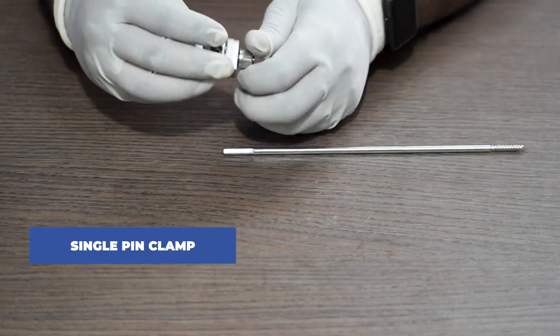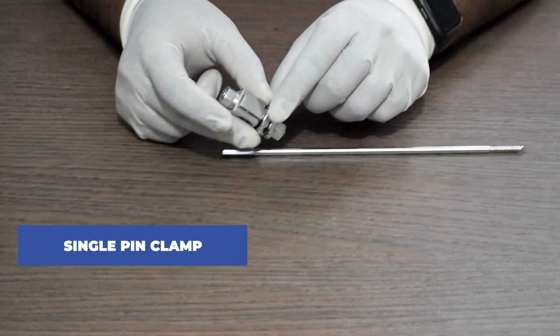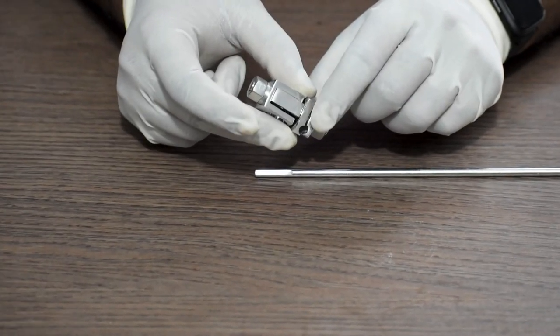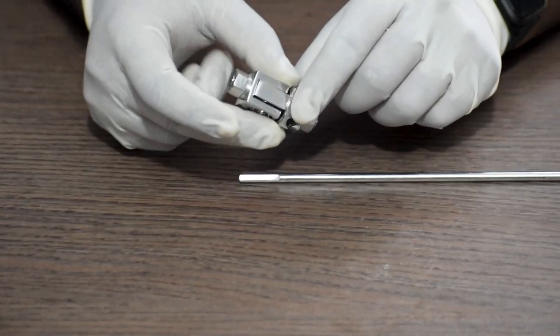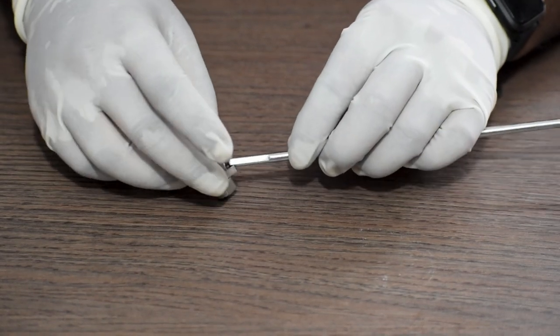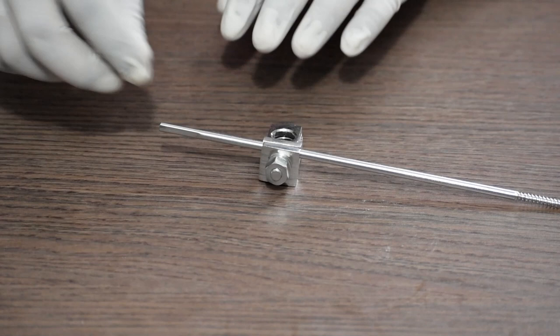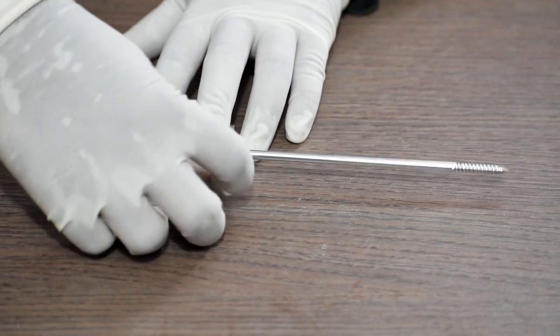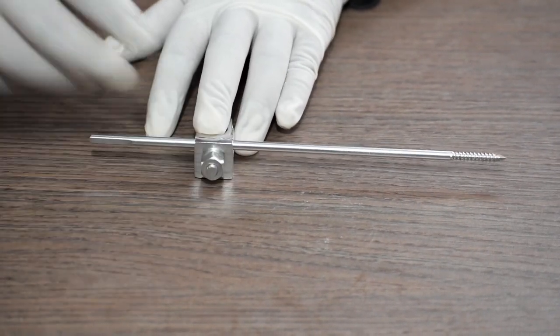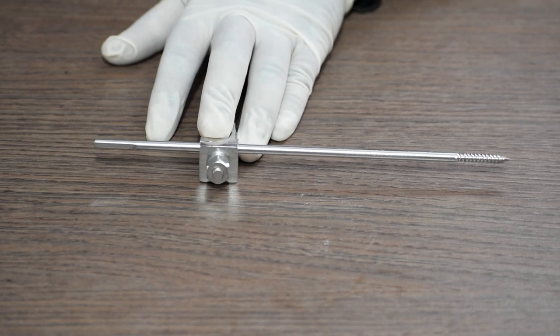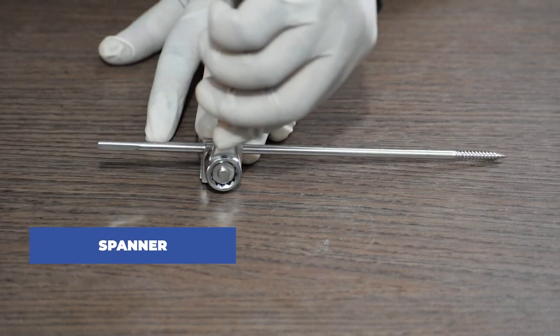Next we take the single pin clamp and we insert the Schanz pin through this pin fixator. Once inserted, we will tighten the nut with the help of the spanner.